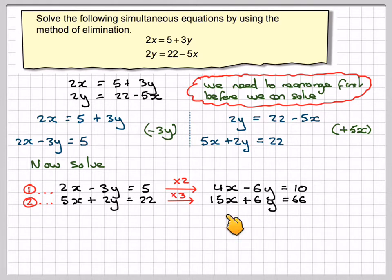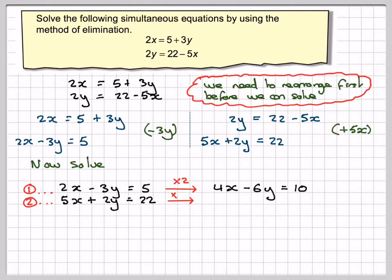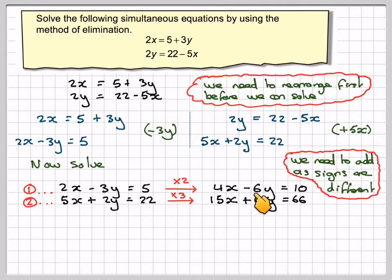We now notice that if we subtract, nothing is actually going to be eliminated here, because minus 6 minus 6 would give minus 12. So we need to actually add the two things together, because if we add minus 6 and plus 6, we actually eliminate one of the variables.